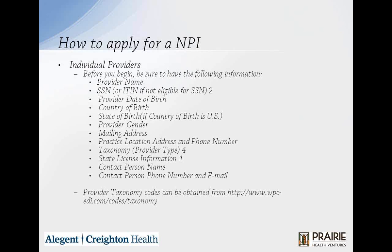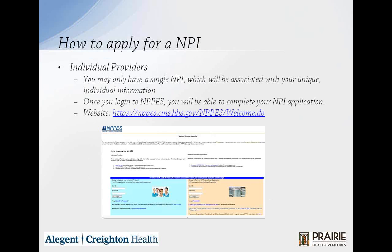Provider taxonomy codes can be obtained from the website listed here. You may only have a single NPI, which will be associated with your unique individual information. Once you log on to the NPPES system, you'll be able to complete your NPI application. I have the website listed here, as well as what it looks like when you actually get onto the right website.